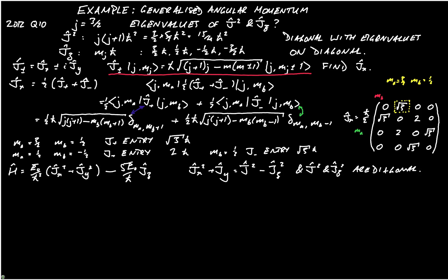We're asked to write h in terms of j plus and j minus and jz. j plus minus and jz, and that's fairly easily done by noticing that j plus j minus is equal to jx plus ijy into jx minus ijy.